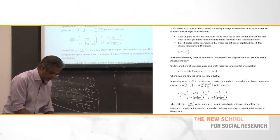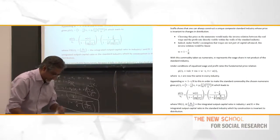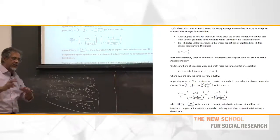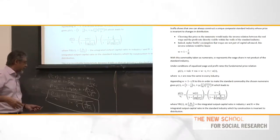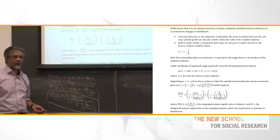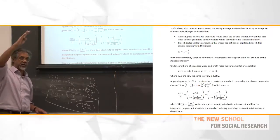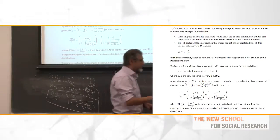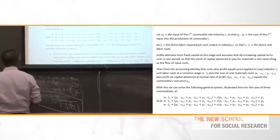Sraffa then says: this seems simple, but keep in mind that the last number here is complicated because it varies with the profit rate. It can vary in ways that make the price move up and down. So it's not true that as you increase the profit rate from zero to the maximum, the price follows a linear path as in Marx. It could follow wiggles, it could change direction, it could go any way.